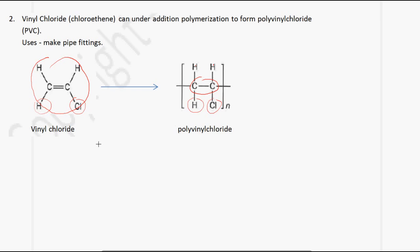When vinyl chloride undergoes an addition polymerization, it forms polyvinyl chloride, or what most people know as PVC. PVC is used to make pipe fittings.